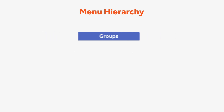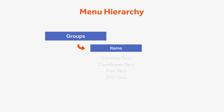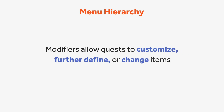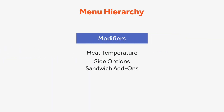Next, your groups will contain items. The last tier of your menu is Modifiers. Modifiers are used to allow guests to customize, further define, or change items. Your modifier options will be organized into modifier groups.